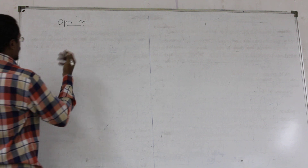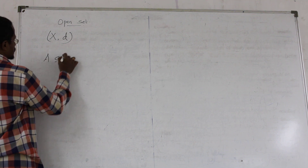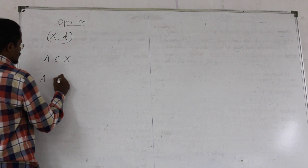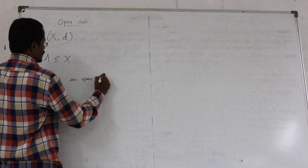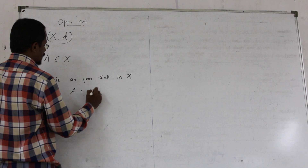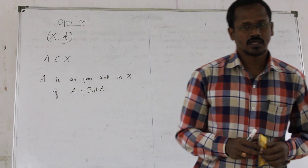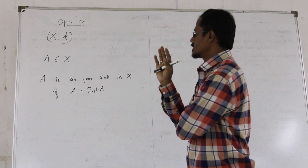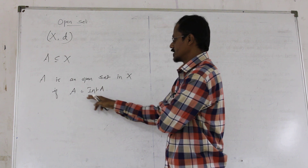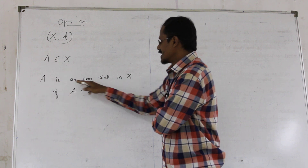So as usual we start with the metric space (X, d). For a given set A, suppose A equals its interior — that is, A equals the interior of A. Then we say that A is an open set in X.